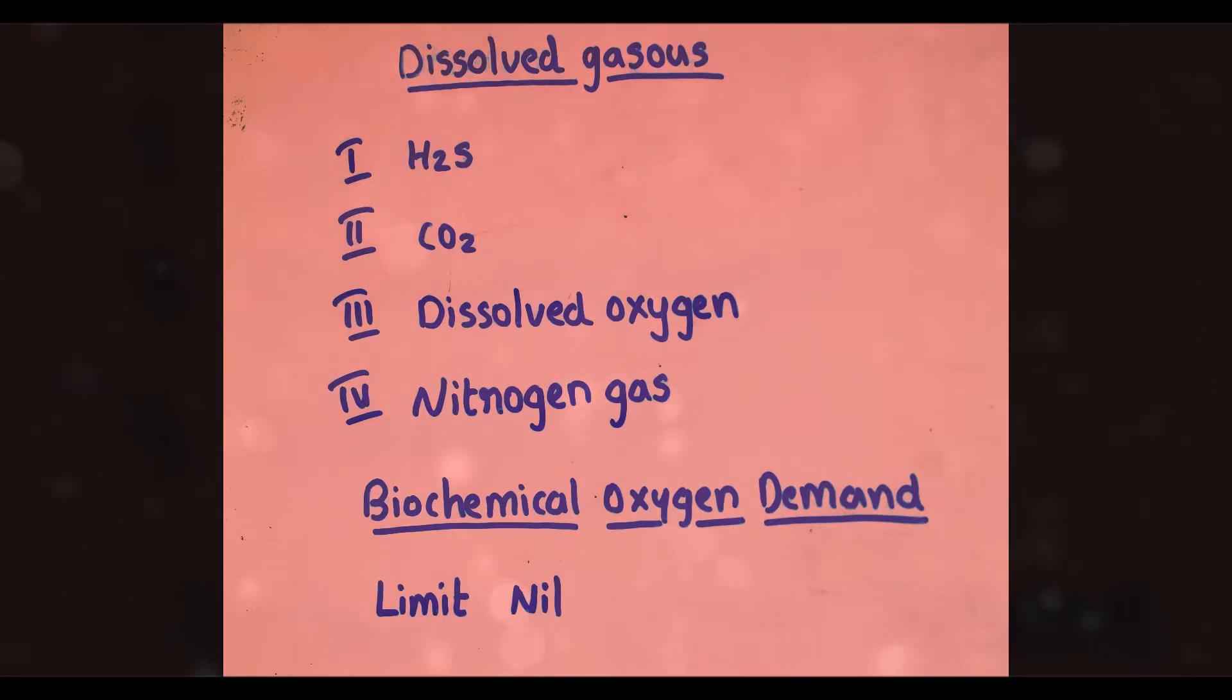Dissolved oxygen is determined by the Winkler method. The permissible limit for potable water should lie between 5-10 PPM. This is the range for dissolved oxygen.